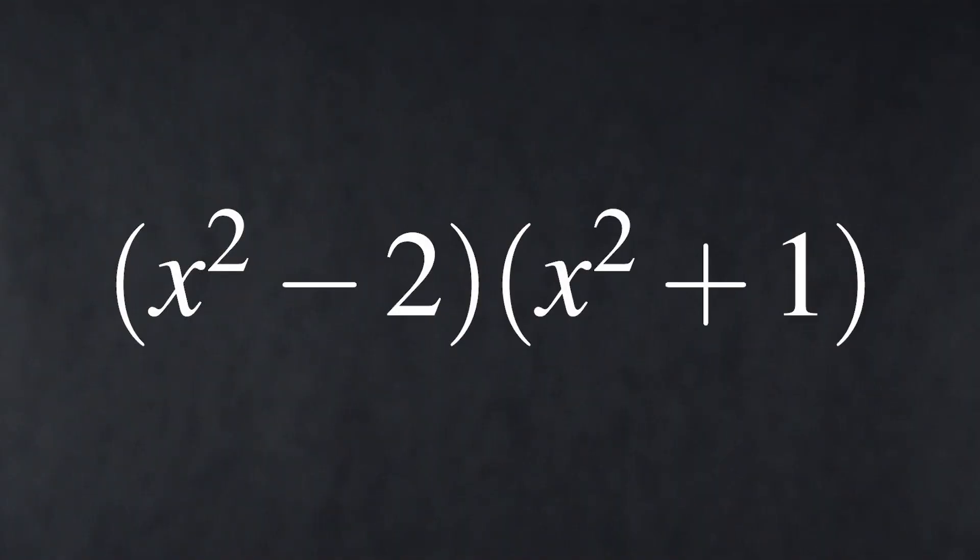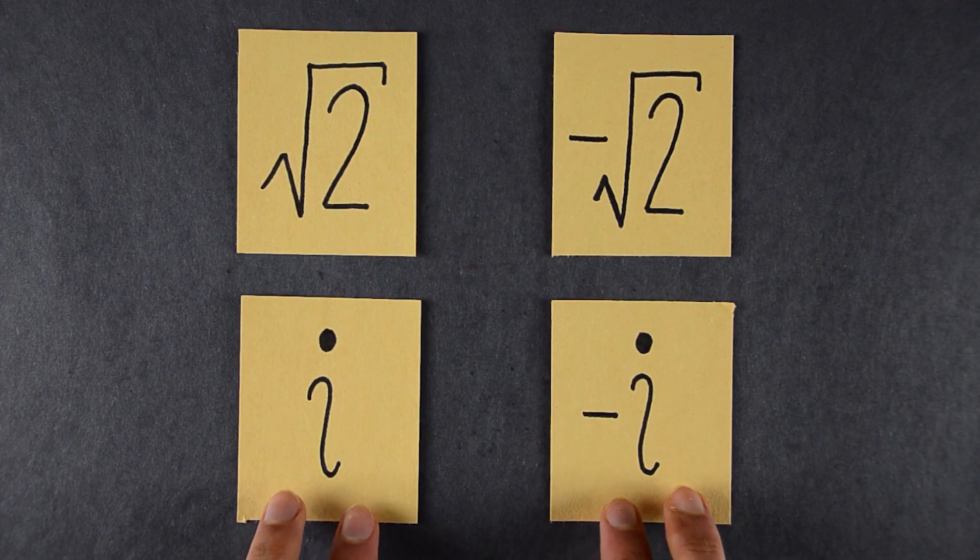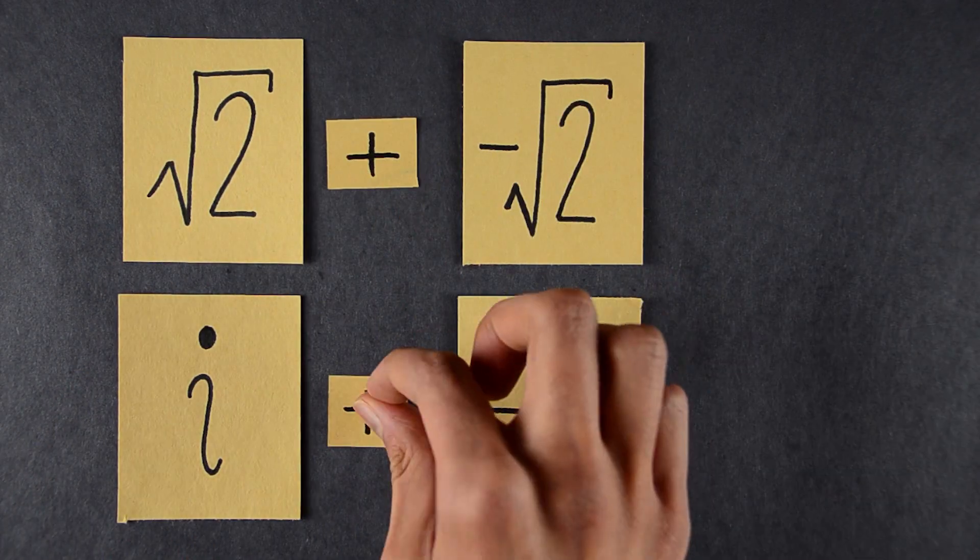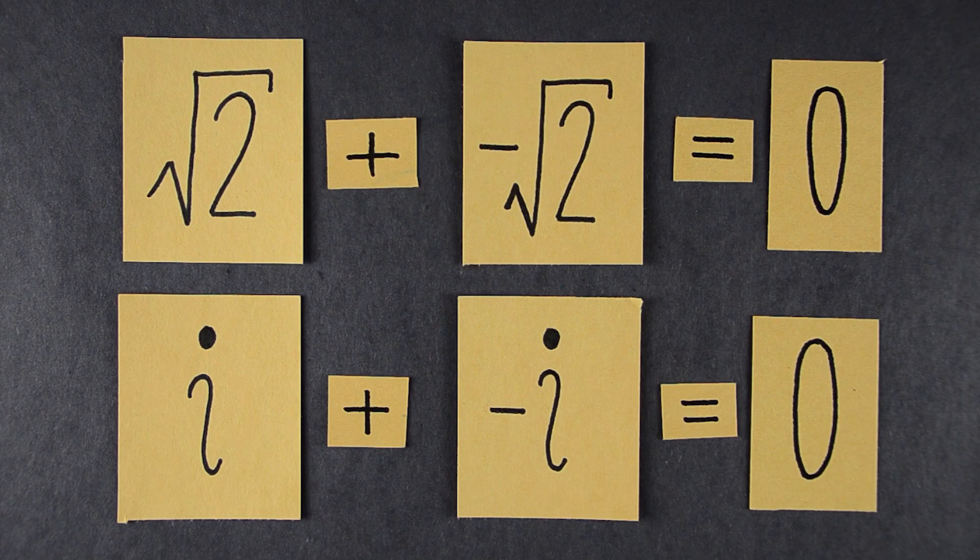Let's say you have a polynomial with four roots: root 2, negative root 2, i, negative i. These roots happen to satisfy these two equations. Our question is, can we swap these roots in any way so that these equations still hold? For example, if we swap root 2 and negative root 2, the equations still hold.